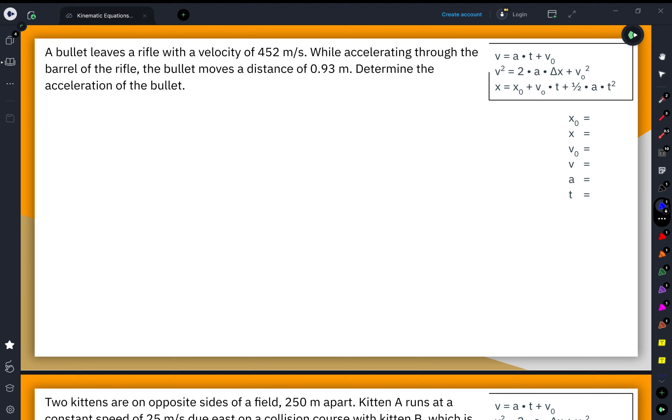So, this problem: a bullet leaves a rifle with a velocity of 452 meters per second. While accelerating through the barrel of the rifle, the bullet moves a distance of 0.93 meters. Determine the acceleration of the bullet.